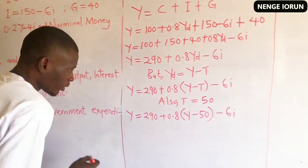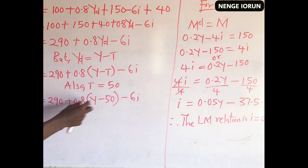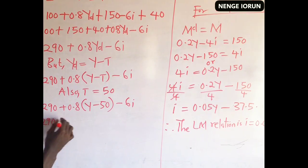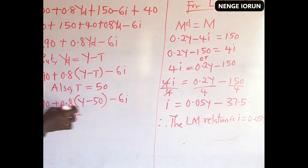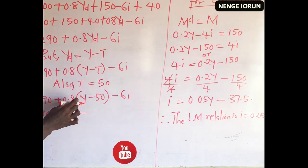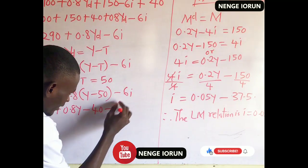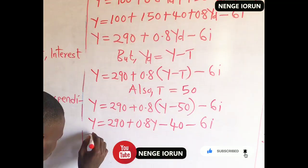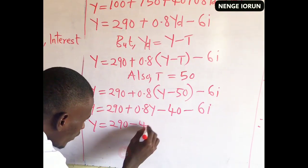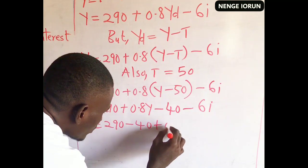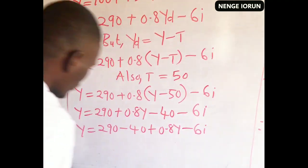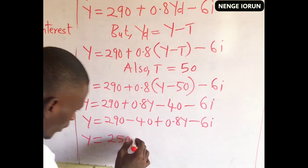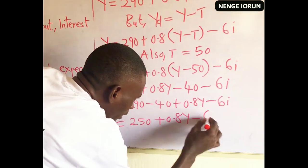Expanding, 0.8 times 50 is 40, so we have Y equals 290 plus 0.8Y minus 40 minus 6R. Collecting like terms, 290 minus 40 gives 250, so Y equals 250 plus 0.8Y minus 6R. Bringing 0.8Y to the left-hand side, we have Y minus 0.8Y equals 250 minus 6R.